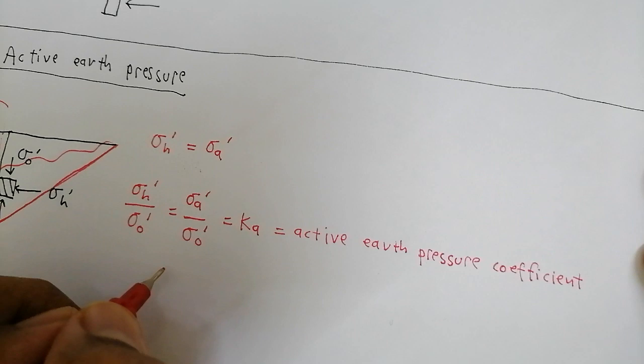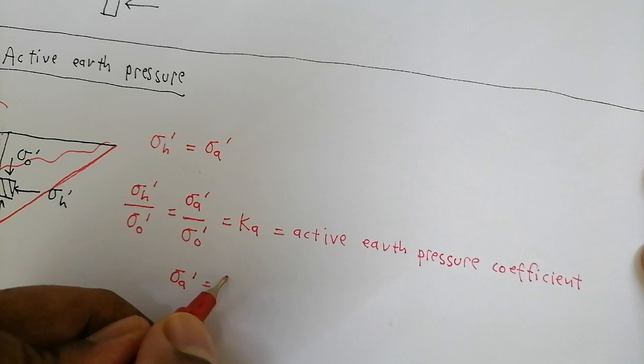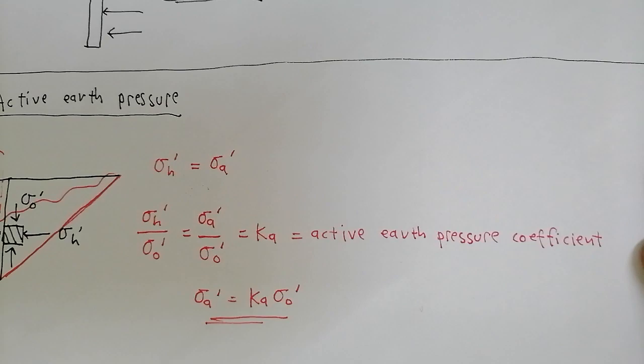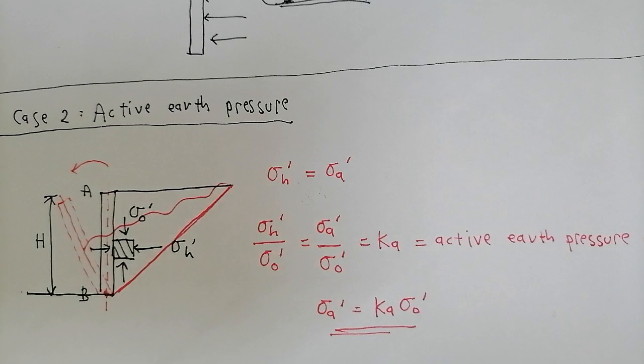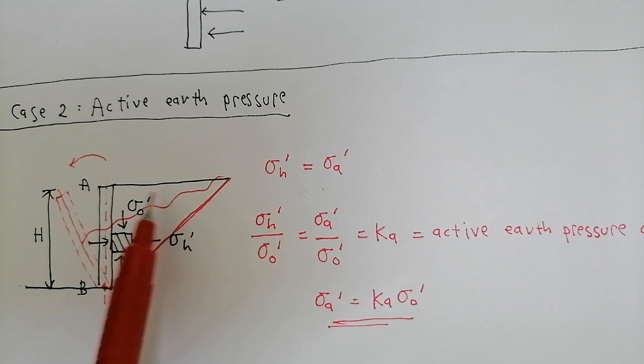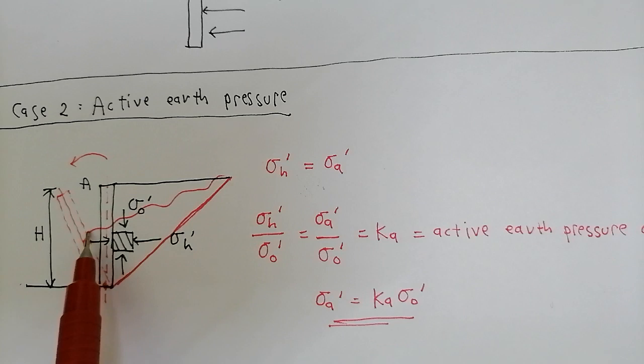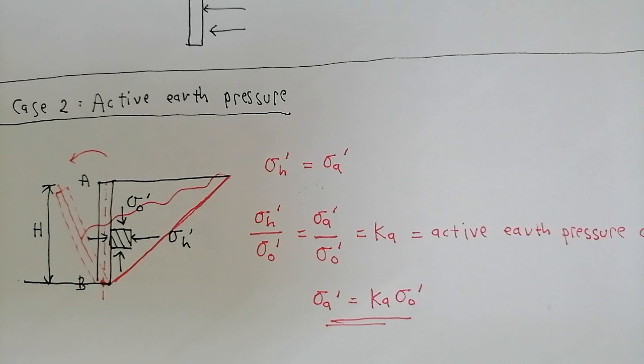To get the active earth pressure, it simply equals Kₐ multiplied by vertical effective stress. This is active earth pressure — case two: the wall moves away from the soil, and the triangular soil mass feels sliding downwards along the failure plane.